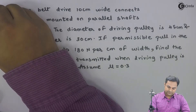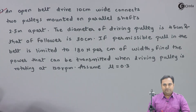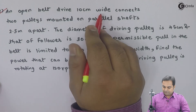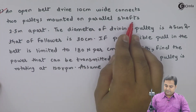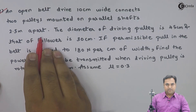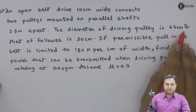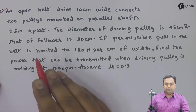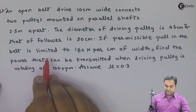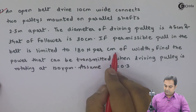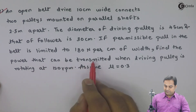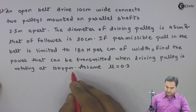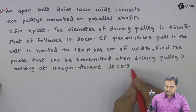Let us take the next question. An open belt drive 10 centimeter wide connects two pulleys mounted on parallel shafts 2.5 meter apart. The diameter of the driving pulley is 45 centimeter and that of the follower — meaning driven pulley — is 30 centimeter. If the permissible pull in the belt is limited to 180 newton per centimeter of width, find the power that can be transmitted when the driving pulley is rotating at 120 rpm. Assume mu is equal to 0.3.